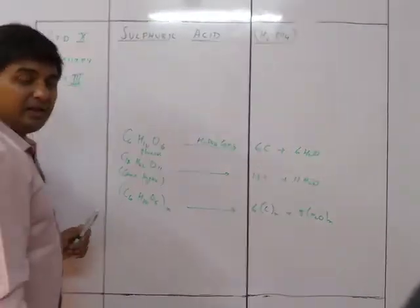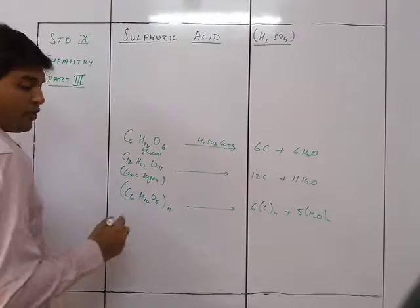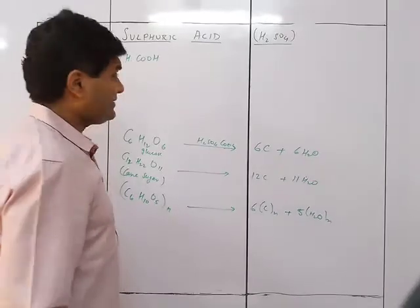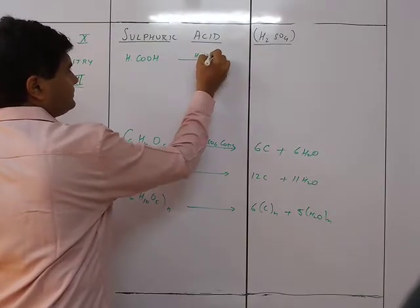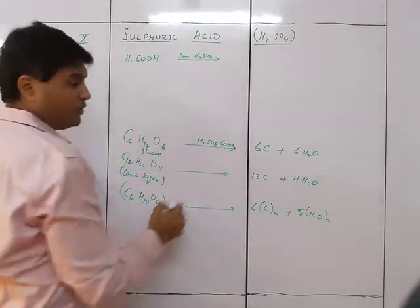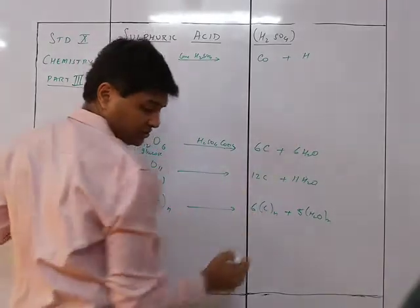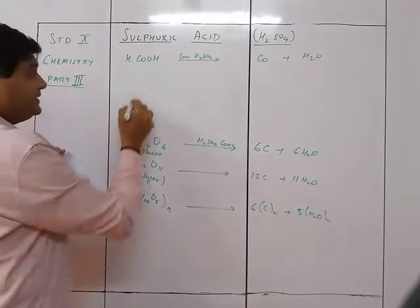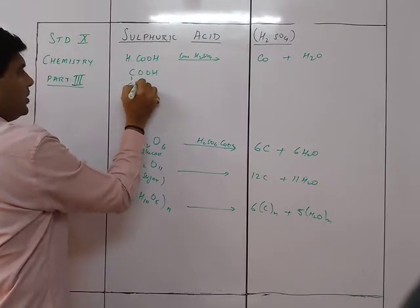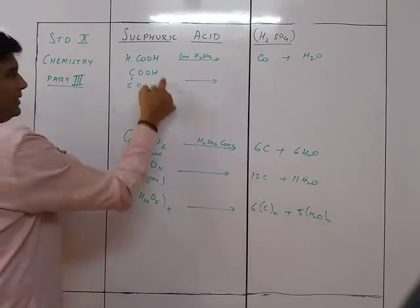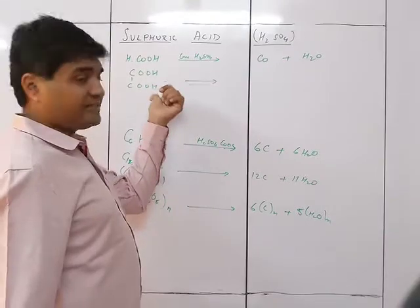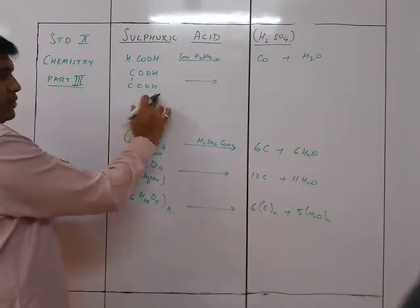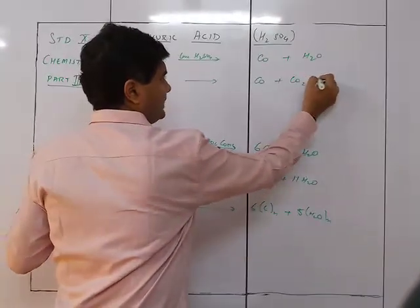Formic acid (methanoic acid, HCOOH) reacted with concentrated H₂SO₄ gives CO + H₂O. Oxalic acid (COOH–COOH) reacted with concentrated H₂SO₄ gives CO + CO₂ + H₂O.